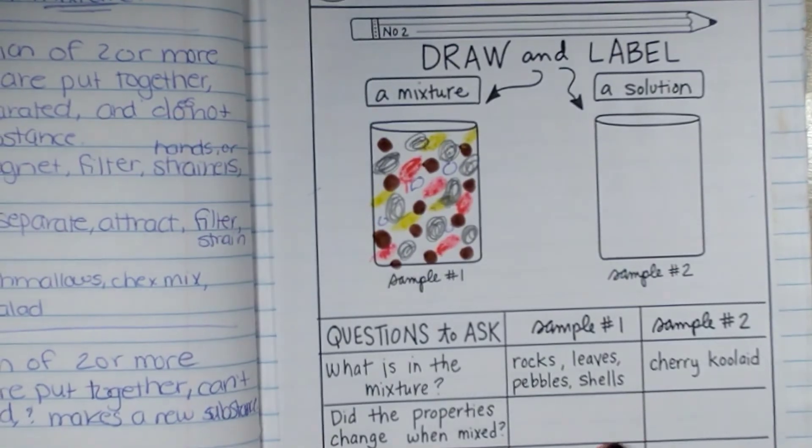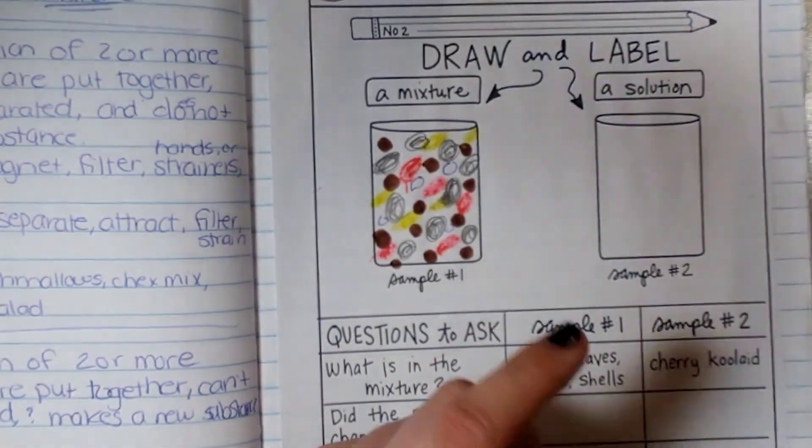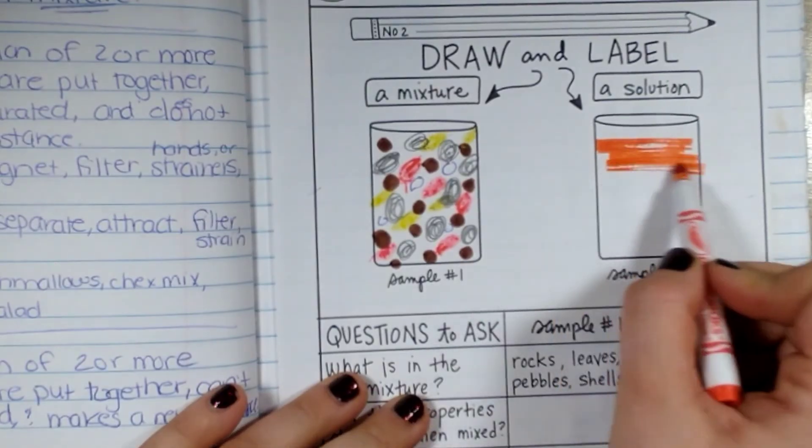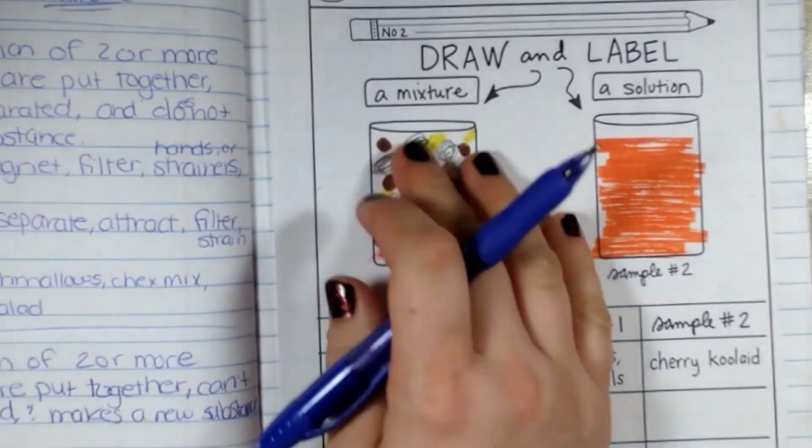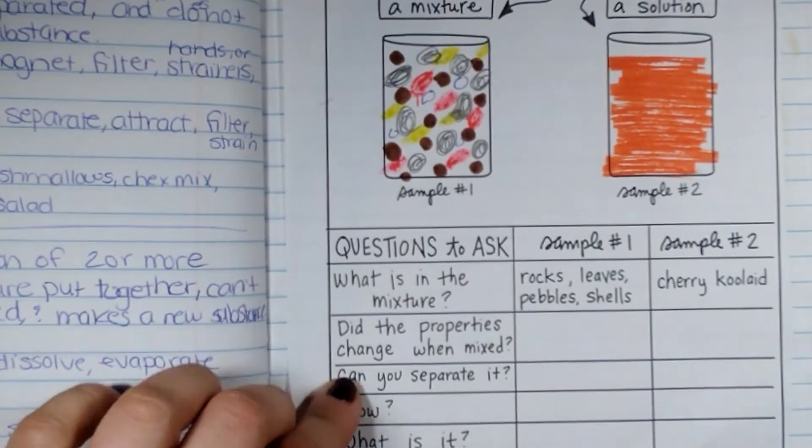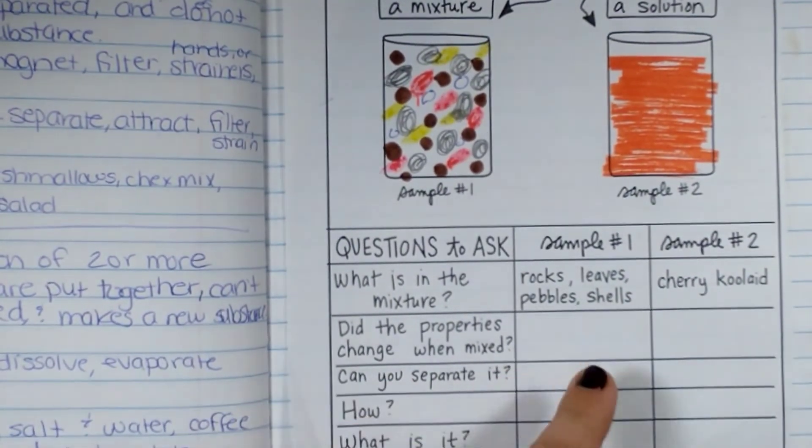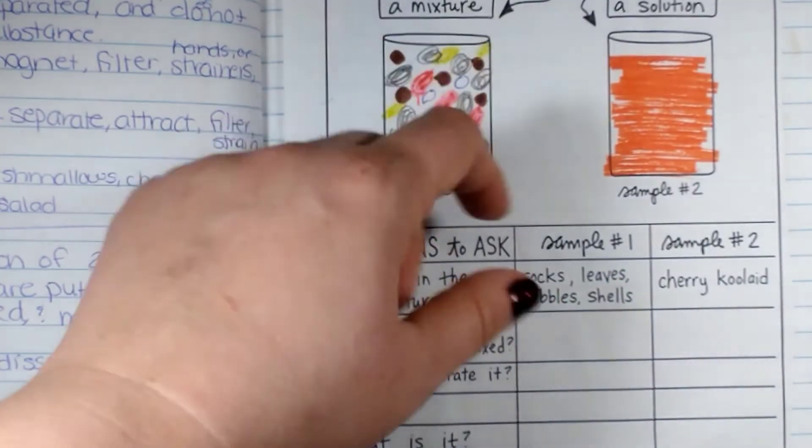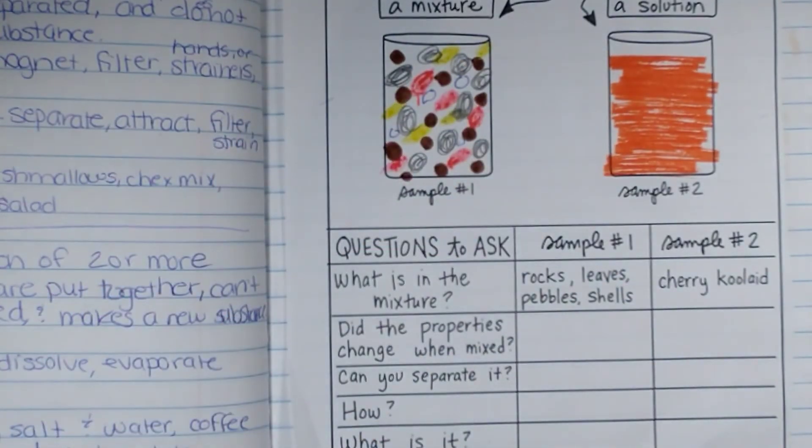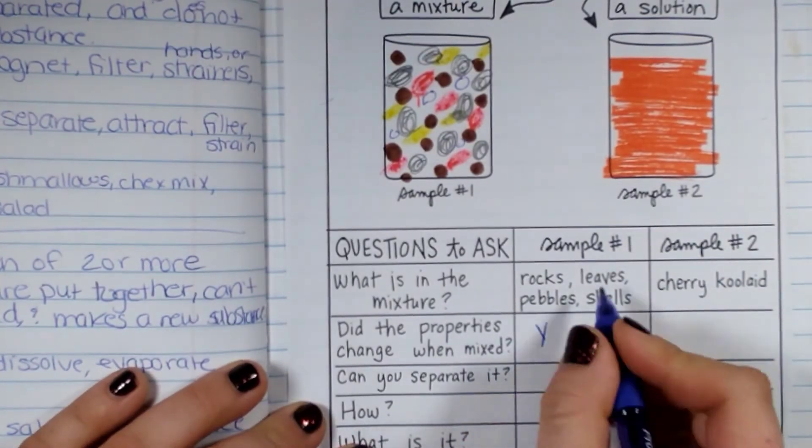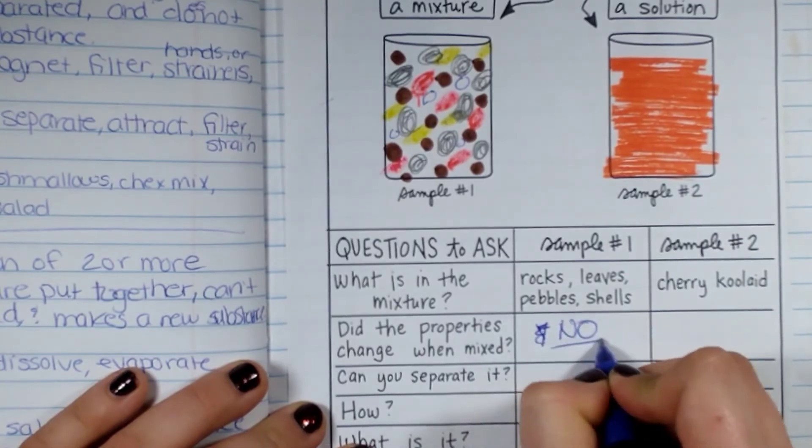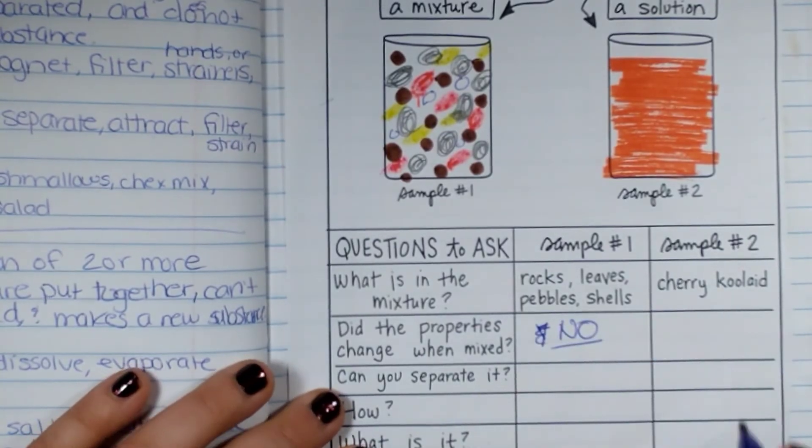And then my other one is going to be cherry Kool-Aid. So when I mix here, did the properties change when I mix rocks, leaves, pebbles and shells? There's still rocks, there's still leaves, there's still pebbles, there's still shells. If I put them in a container like I'm collecting them from my front yard, or if I'm going on a beach and I'm collecting them all, they're the same. They're still the same.